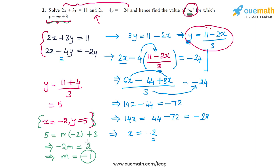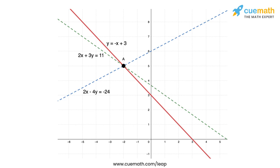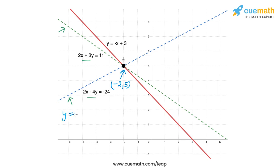Now let me talk about an interesting graphical way to think about this question. The two equations 2x plus 3y equal to 11 and 2x minus 4y equal to minus 24 are represented as the two dotted lines in this picture. This line is 2x minus 4y equal to minus 24 and this line is 2x plus 3y equal to 11. The solution of this pair is the point of intersection A, which is the point minus 2 comma 5.